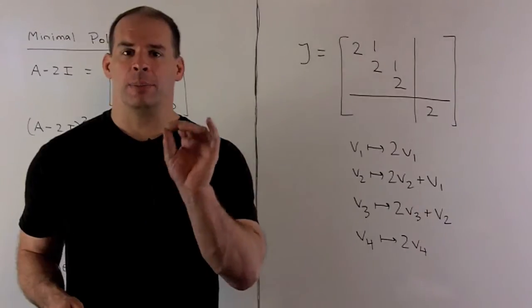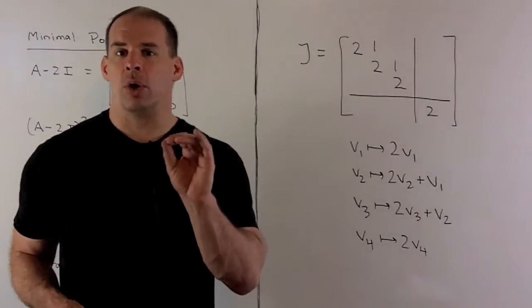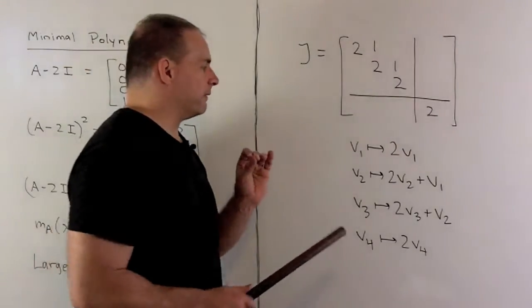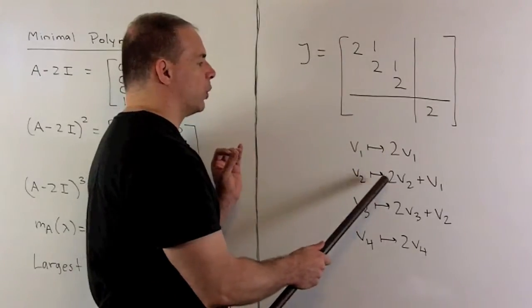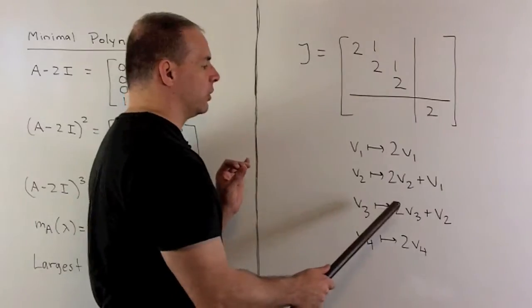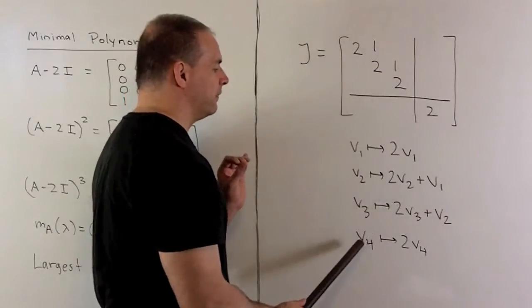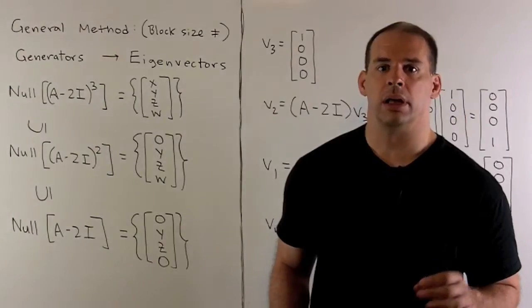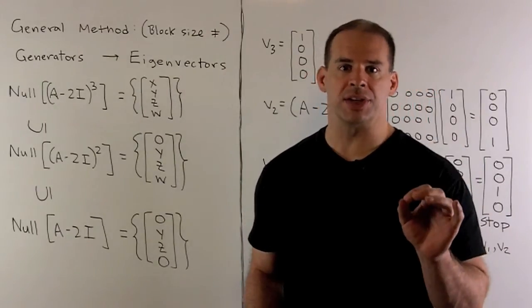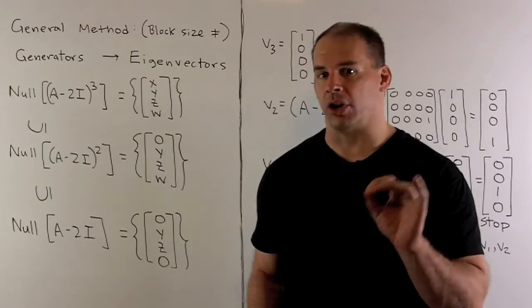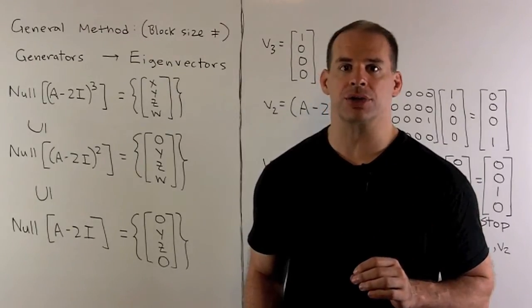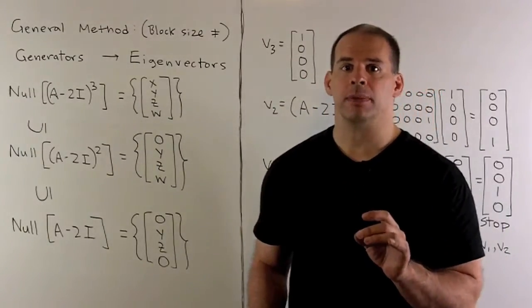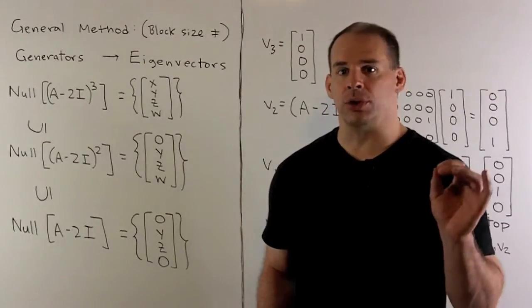If we want to find the basis that puts A into this form, we should first decode what the columns say. If our basis is V1 through V4, we have that V1 goes to twice V1, V2 goes to twice V2 plus V1, V3 goes to twice V3 plus V2, and V4 goes to twice V4. So V1 and V4 are going to be eigenvectors. In our previous example, to find our basis, we wrote out our equations, plugged in our eigenvectors, and solved for the other two vectors. That worked because our blocks were the same size. In general, if we start from the eigenvectors, we're going to have to use some trial and error.